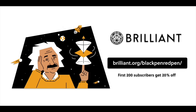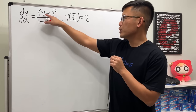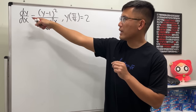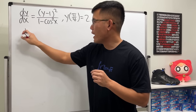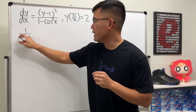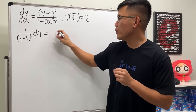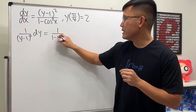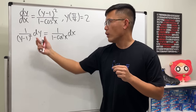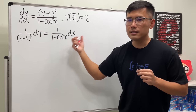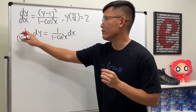Now let's get started with question number one. For the first one, we have a separable differential equation because we can put the (y-1)² to the other side and multiply dx over. So we get 1 over (y-1)² in the y world, equal to 1 over (1 - cos²x) in the x world. We have all the y's on one side and all the x's on one side, so we can integrate both sides.